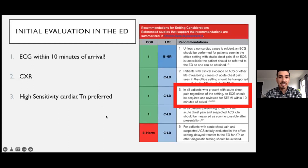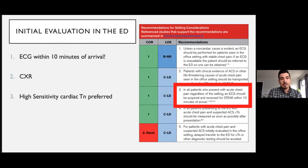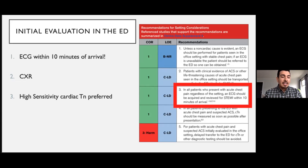Initial evaluation in the ED: the chest pain guidelines made recommendations for what the initial evaluation should be. An ECG within 10 minutes of arrival, a chest x-ray to look for other non-cardiac causes of chest pain, and a high-sensitivity cardiac troponin is preferred. In patients whose initial EKG is non-diagnostic, serial EKGs should be performed to detect any possible ischemic changes, especially if clinical suspicion is high, if symptoms persist, or if the patient deteriorates clinically.